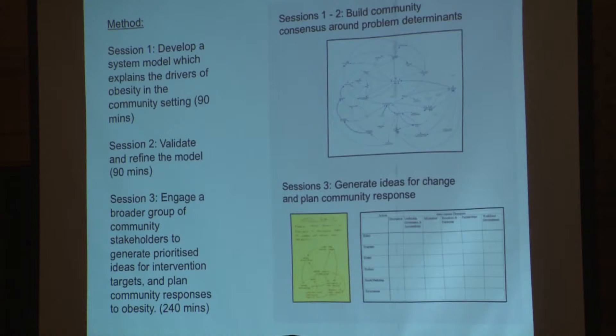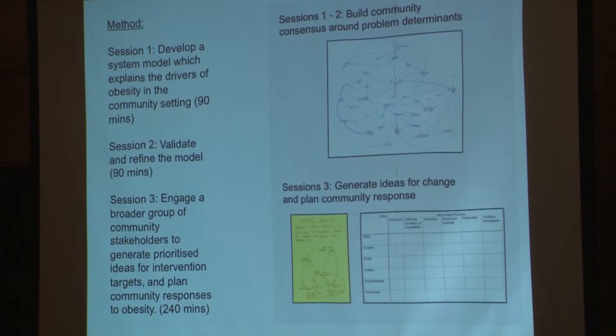You can see an example of a map there in sessions one to two on the slide — it looks quite similar to the one that Steve presented earlier, the same sort of model. This is a conceptualization of the complexity of the issue within the community. That first workshop session runs for about 90 minutes, and the goal is to build that model. In the second session we come back and work again with the community to validate that model. Then in the third session we engage a broader group — expanding to include important community leaders — to create action ideas.